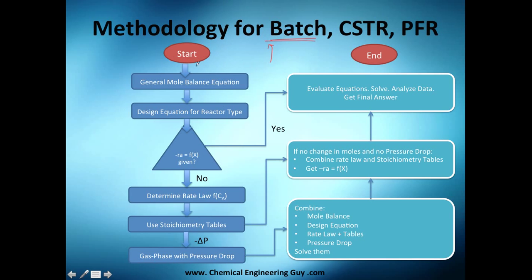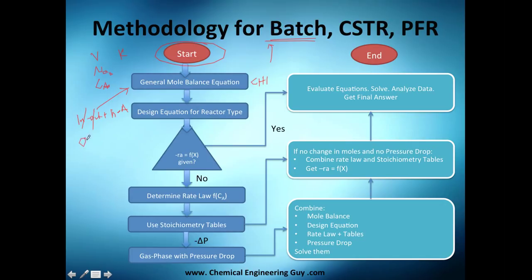For the batch reactor, you start with your problem — your constants, volumes, maybe initial moles or concentrations. You begin with the general mole balance equation from chapter one: inlet minus outlet plus generation equals accumulation. For the batch, you don't have inlet or outlet, so it's just generation equals accumulation, where accumulation is the derivative of moles with respect to time.